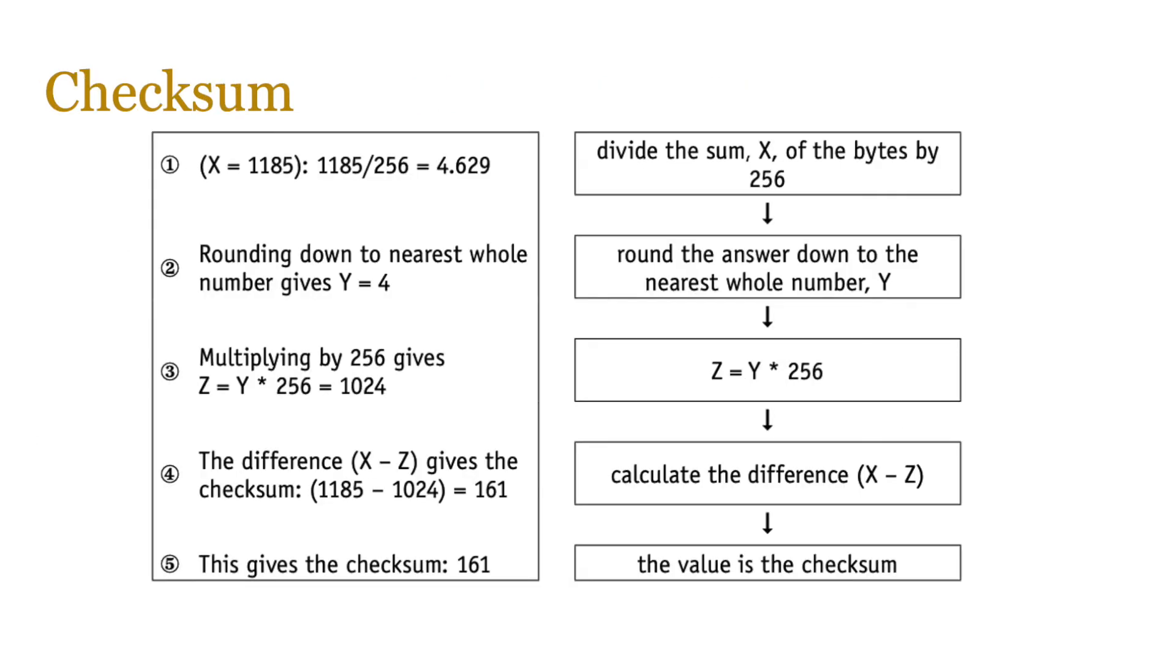So we take the number and divide the sum X, which is the total of the block of bytes, by 256, because 2 to the power 8 is 256. We round the answer down to the nearest whole number. So in this case, 1185 divided by 256 equals 4.629. We round it down to the nearest whole number, which gives Y equals 4. We then multiply this number by 256, 2 to the power 8 remember, and then we calculate the difference between the original number and this number.